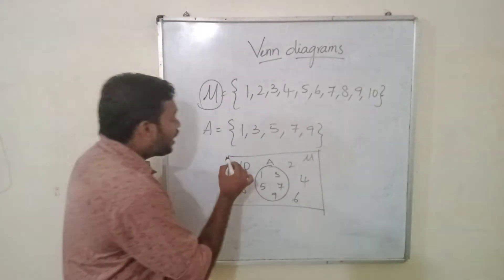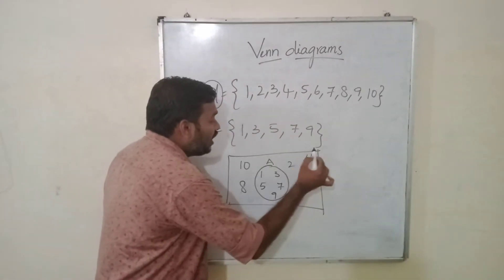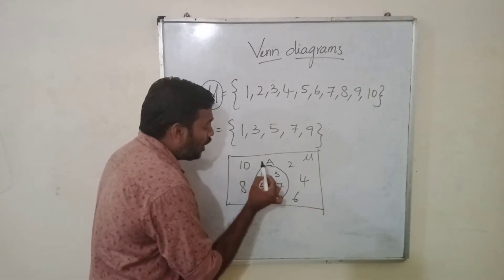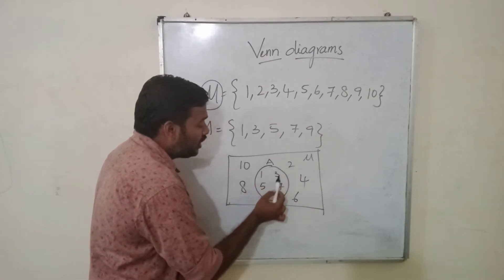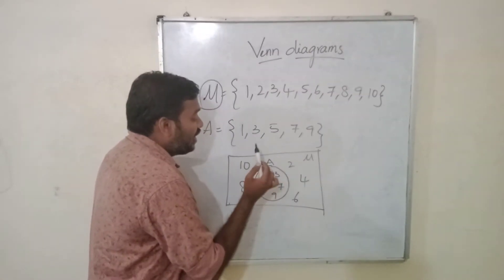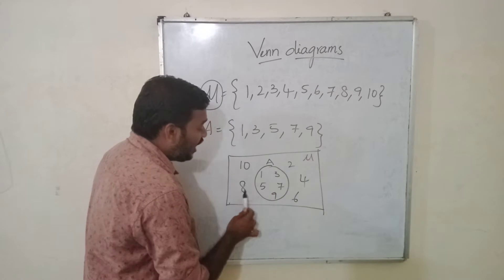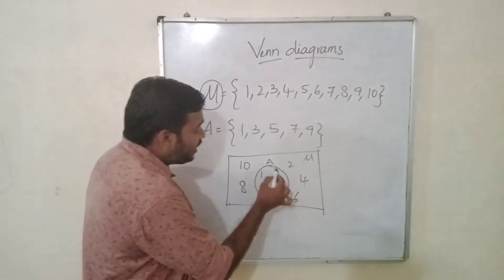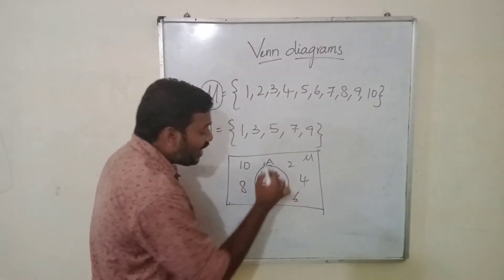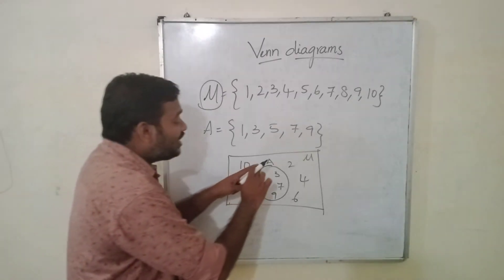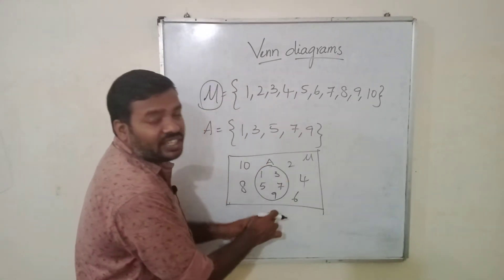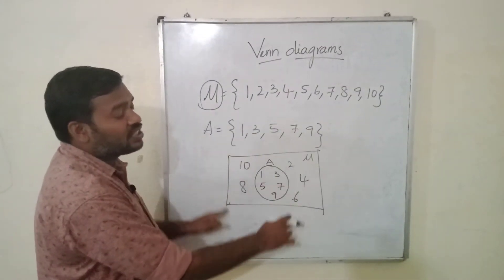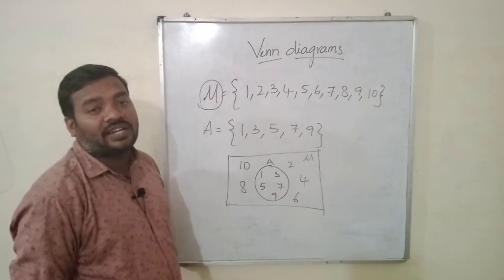So we are representing the universal set and writing 1, 2, 3, 4, 5, 6, 7, 8, 9, 10. And we are representing set A separately. That means we are distinguishing set A within the universal set.